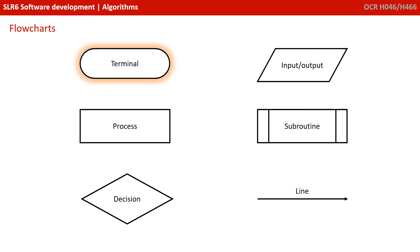You've got a terminal symbol, and that shape represents the start or end of a process. Then you have a process symbol, and this shape represents something being initialised, processed or calculated.